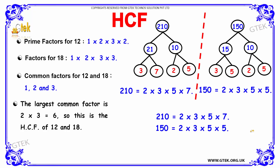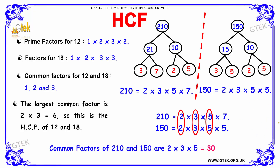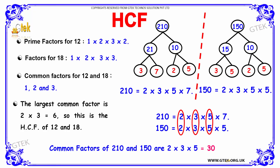To find the HCF, we identify the common factors among the factor lists of 210 and 150. The common terms are 2, 3 and 5. Multiplying the common factors gives 2 into 3 into 5 which equals 30. So 30 is the Highest Common Factor of 210 and 150.